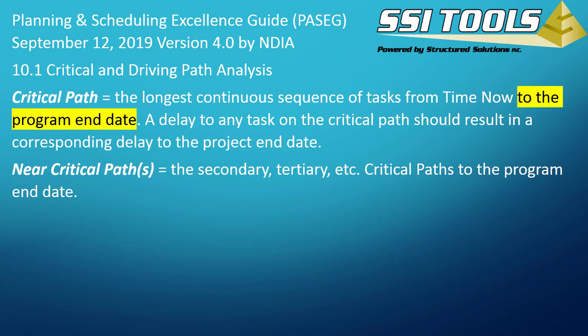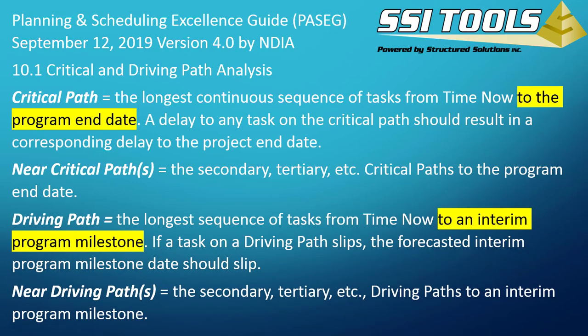A driving path analysis is identical to the critical path, except it's the longest sequence of tasks from time now to an interim program milestone instead of the end date of the project. In other words, you get to pick the end date and the analysis is performed to that point, ignoring all tasks that start after that point in the schedule. And as with the critical path, you have parameters that define secondary and tertiary, or near driving paths, as well.